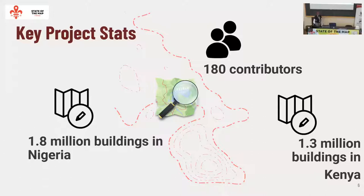From Nigeria, we were able to map Bauchi State and Gombe State. In total we actually mapped two states — because people are still mapping — with over 1.8 million building footprints in Nigeria and 1.3 million building footprints in Kenya. In Kenya, we mapped Nakuru and Nakuru County.